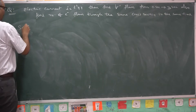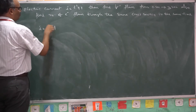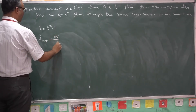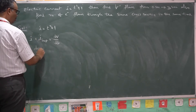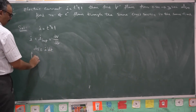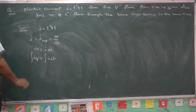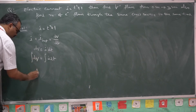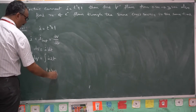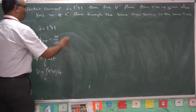Solution: in the earlier problem, charge was given and you found current. Now current is given as t² + 1. You know that instantaneous current is dQ/dt. Therefore dQ = I·dt. In order to remove the derivative, you use integration: integral dQ = integral I dt, so Q = integral of (t² + 1) dt. Time varies from 0 to 3 seconds.